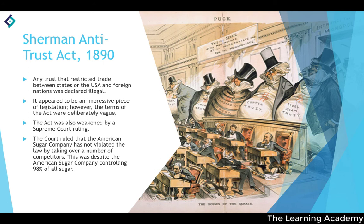The Sherman Antitrust Act of 1890 declared that any trust restricting trade between states or with foreign nations was illegal. However, it appeared impressive only on the surface — many of its terms were deliberately vague to allow interpretation, and it was weakened by a Supreme Court ruling. The court ruled that the American Sugar Company had not violated the law despite controlling 98% of all sugar output, effectively stifling the Act's purpose of breaking up monopolies.